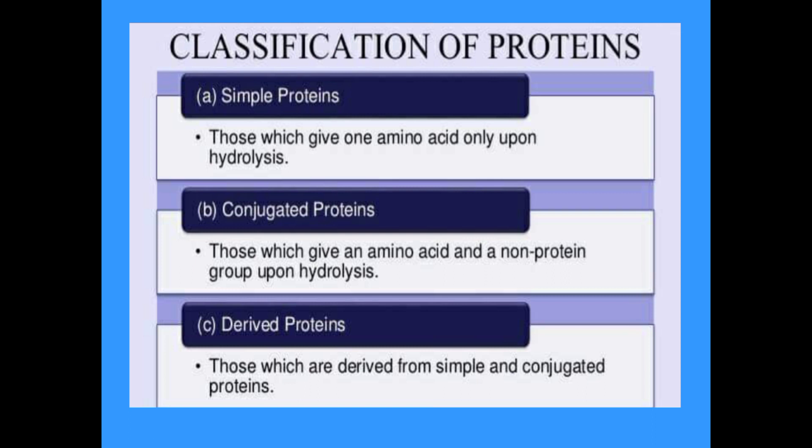Classification of proteins: proteins may be classified as simple proteins, conjugated proteins, and derived proteins. Simple proteins yield only amino acids upon hydrolysis. Conjugated proteins yield amino acids and a non-protein group upon hydrolysis. Derived proteins are those derived from simple and conjugated proteins.